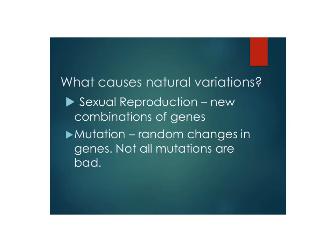You might ask what causes these natural variations. The first cause is sexual reproduction — when two organisms join together and form a new organism, they're combining all of their different genes and characteristics to form a whole new combination. That's why you look a little like your parents, but not exactly. The second cause is mutation — a random change that happens in genes. Some mutations aren't bad; some mutations could actually be good.